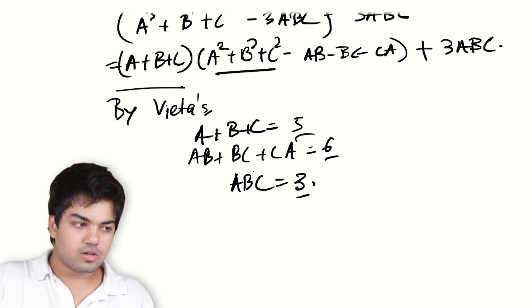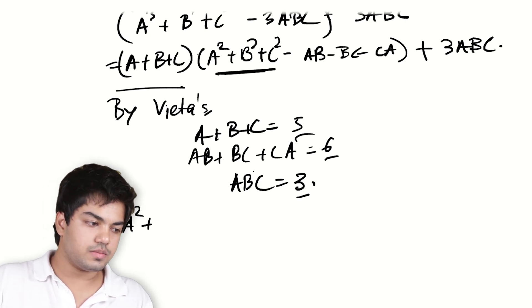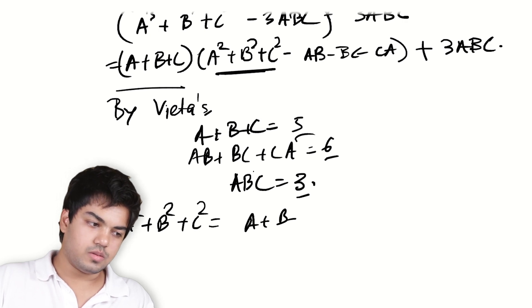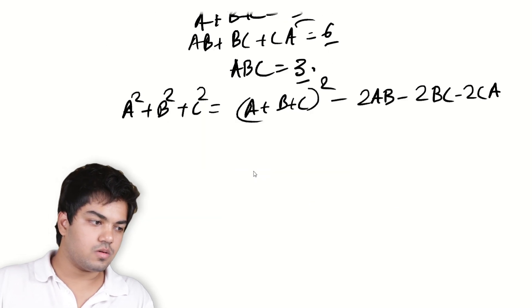You might say how do I find A² + B² + C² in these terms? I'll just use the fact that A² + B² + C² is just (A + B + C)² minus 2AB minus 2BC minus 2CA. Right?